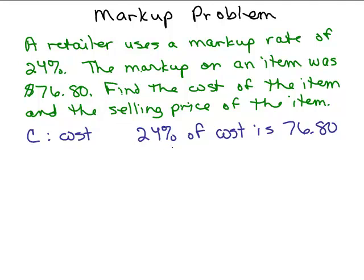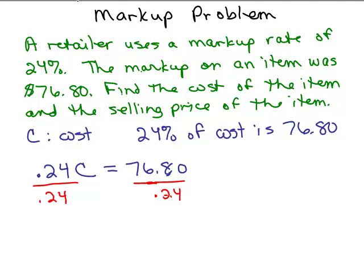How do you write 24 percent? Well, that's 0.24 and the cost, you're going to multiply by the cost. So we have 0.24C, that is the same thing as $76.80. That's going to give us the cost which is part of this problem. So we're just going to divide both sides by 0.24. And I came up with 320. So that must be the cost of the item.